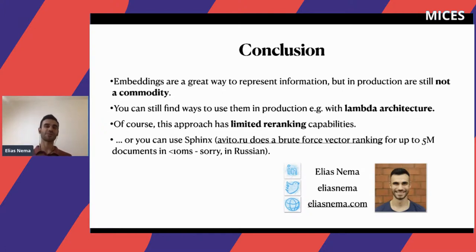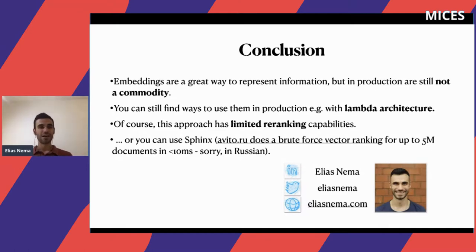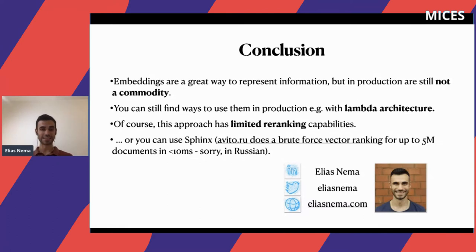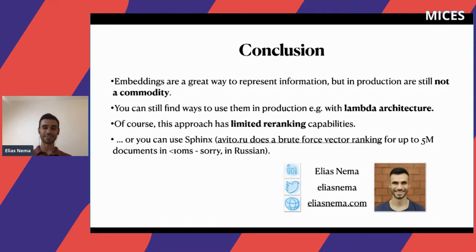The learnings: embeddings are a great way to represent information, and that's probably where the field is going. More and more people are talking about embeddings, more companies are using them, and more products are adding embedding support. But it's still not a commodity — you can find ways to use them in production, for example with caching and lambda architectures, though with some limited ranking capabilities. One company in our group, Avito, uses Sphinx and stores embeddings there, doing brute-force search over up to five million vectors — usually one to two million — with ranking, in under 10 milliseconds. There's a link, though it's in Russian, and I'm happy to chat offline.